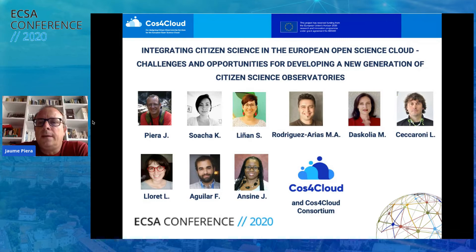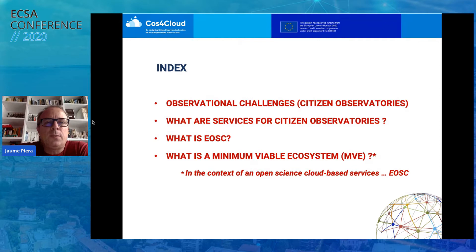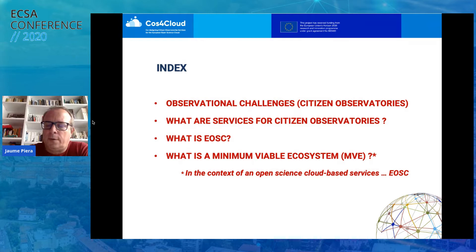What we will try here is to show a little bit the opportunities in citizen science and in particular on the platforms in citizen observatories in the context of the new infrastructure framework of the European Open Science Cloud. To illustrate these opportunities, we will talk about the observational challenges in the context of citizen observatories, what we define as services within citizen observatories, what is this general infrastructure — the European Open Science Cloud — and how we can create what is called the minimum viable ecosystem of services.